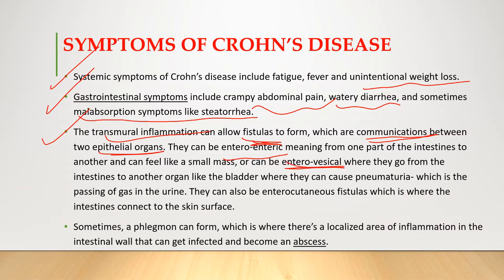The second type is enterovesical fistulas, which are from the intestine to another organ like the bladder, causing pneumaturia — the passage of gas in the urine. The third is enterocutaneous fistulas, where the intestine connects to the skin surface.